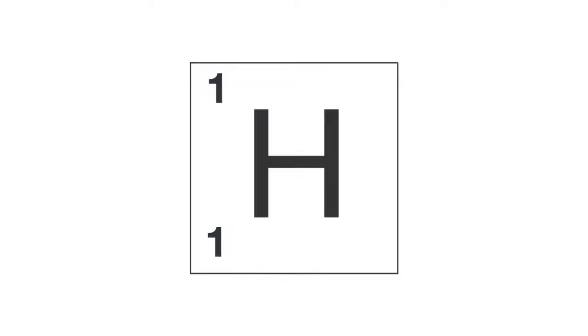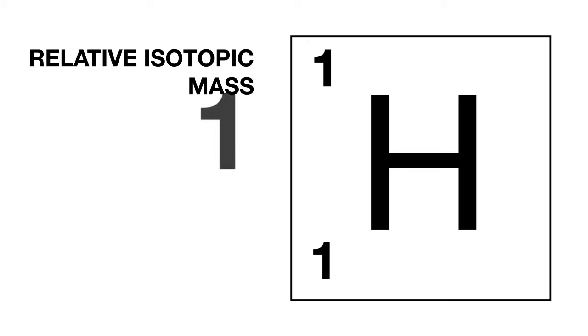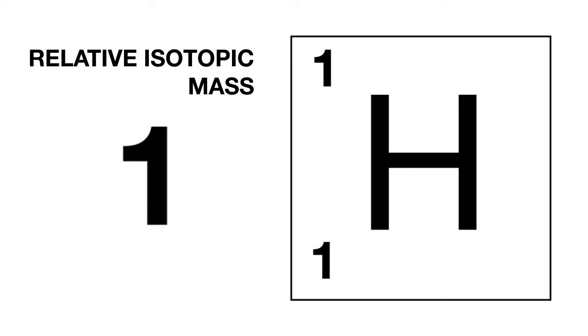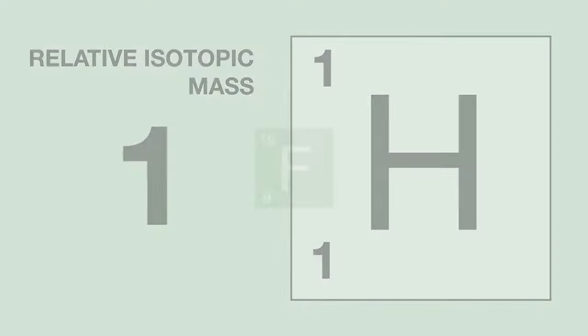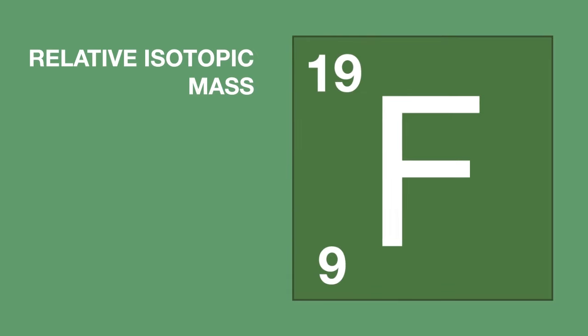Following this rule, a hydrogen atom has a relative isotopic mass of one, and a fluorine atom has a relative mass of 19.